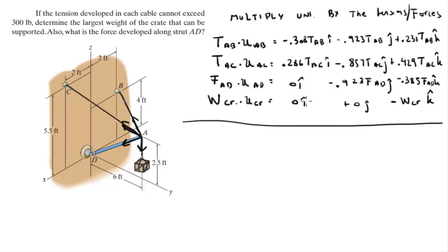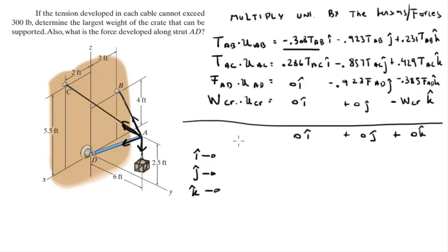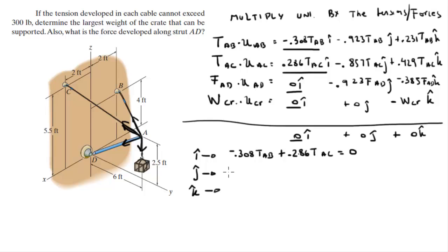Now that we have this table, since the system is in equilibrium, all these Cartesian vectors must add up to zero in i, j, and k. That gives us three equations — one for i, one for j, and one for k. For the i-equation: -0.308 T_AB + 0.286 T_AC + 0 + 0 = 0.